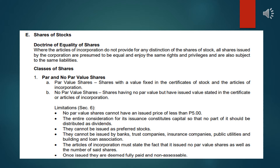Let's begin with the shares of stocks. Under the shares of stocks, we have the doctrine of equality of shares. Where the articles of incorporation do not provide for any distinction of the shares of stocks, all shares issued by the corporation are presumed to be equal and enjoy the same rights and privileges, and are also subject to the same liabilities. If there is no distinction as to what type of shares the corporation will issue, then all shares have equal rights and privileges — whether classified as common shares, preferred shares, or any type of shares.